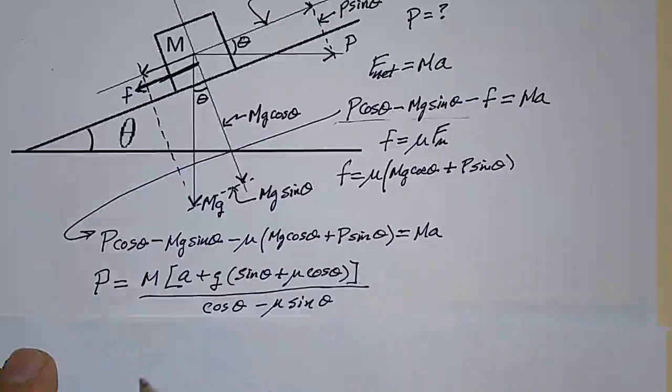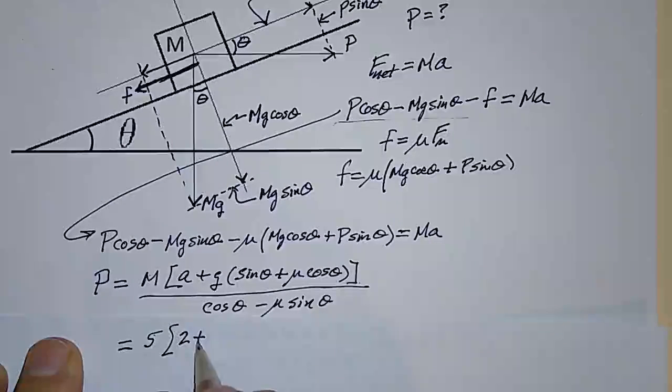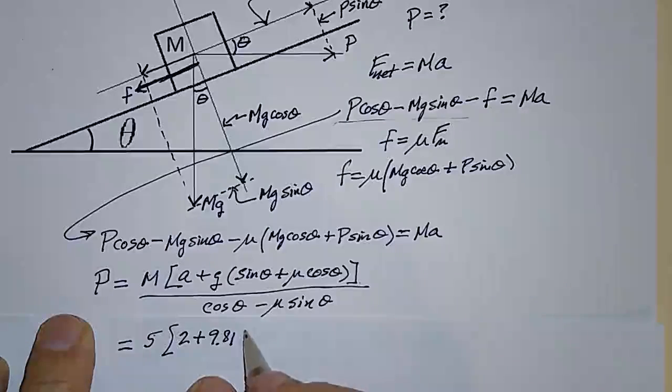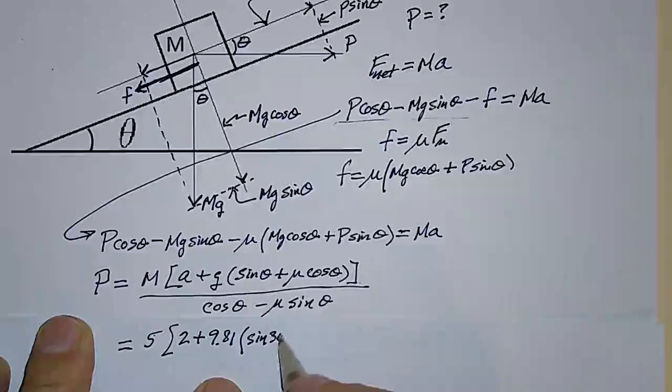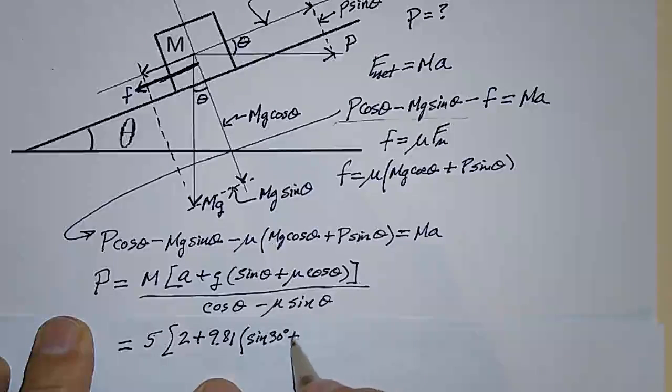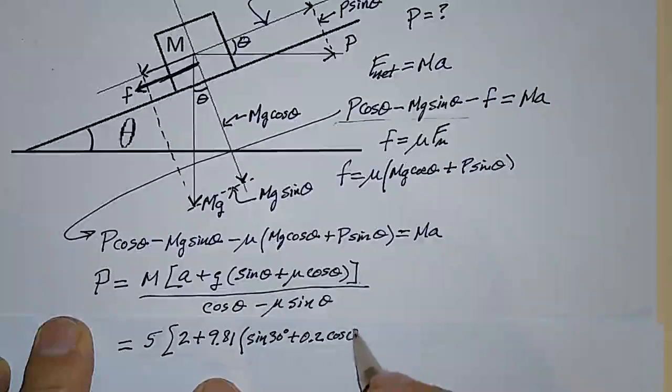So let's plug the numbers in. P is equal to 5 times A, the acceleration is 2, plus G, which is 9.81, times the sine of 30 degrees, plus mu, which is 0.2, times the cosine of 30 degrees.